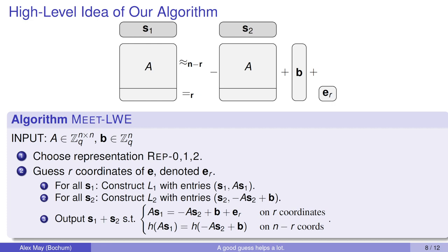Let's have a look at the algorithm, meet-LWE. In the first step, you choose your preferred representation, rep-0, 1 or 2. Then there's a loop that guesses the r-coordinates of E, denoted by ER. For every guess of ER, you now enumerate all S1 within your representation and the left-hand side A times S1. For all S2, you enumerate the right-hand side minus A S2 plus B. Then you output all sums S1 plus S2 such that the meet-in-the-middle identity A S1 equals minus A S2 plus B plus ER is exactly fulfilled on r-coordinates and approximately fulfilled on the remaining n-coordinates. This approximate fulfilledness you check via Odlyzko's locality-sensitive hash function.